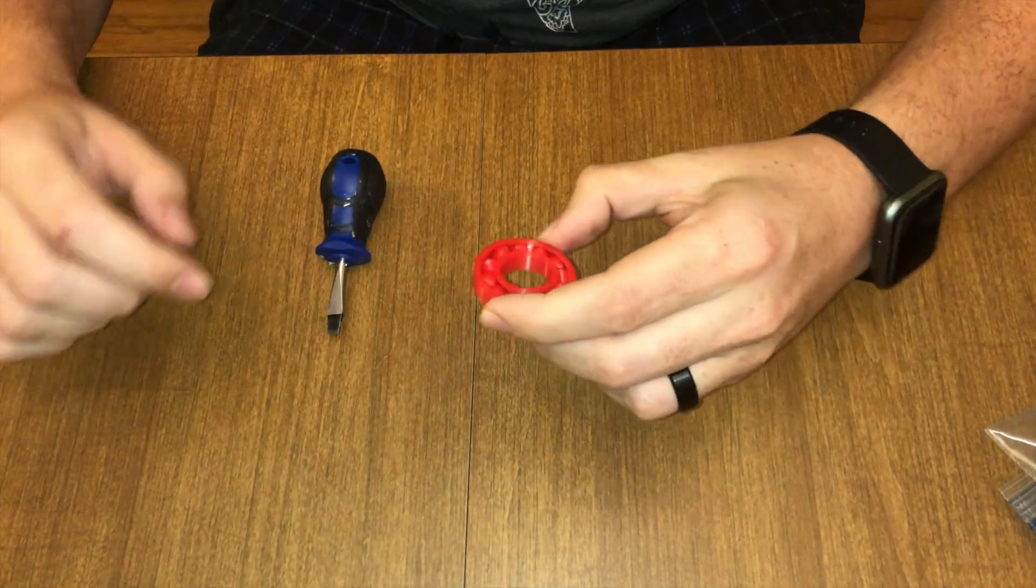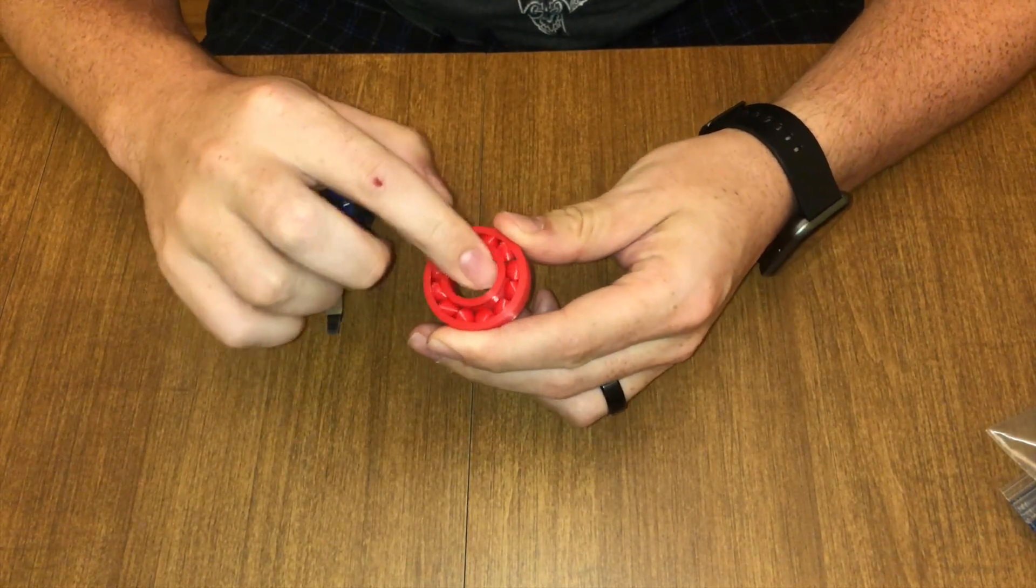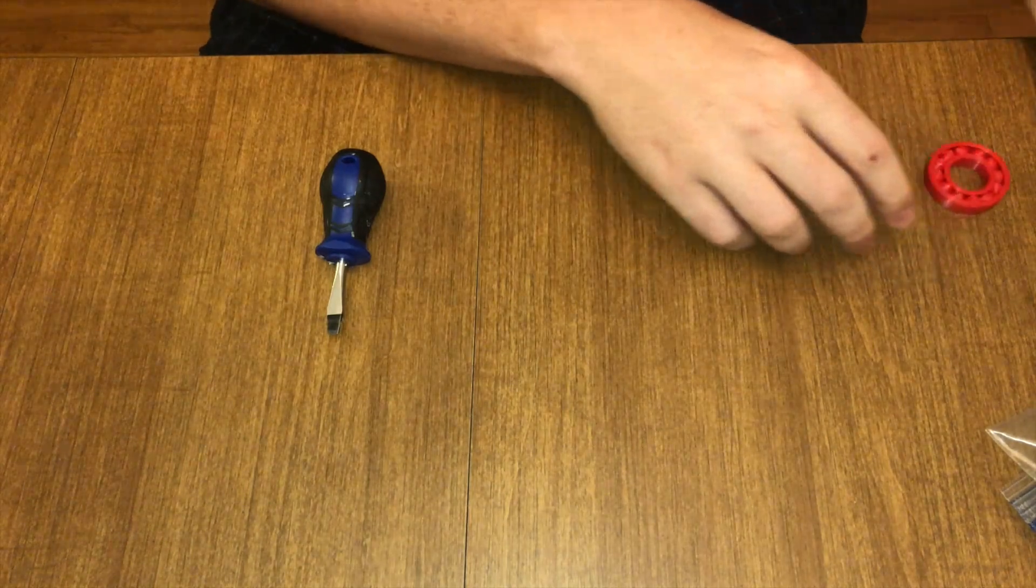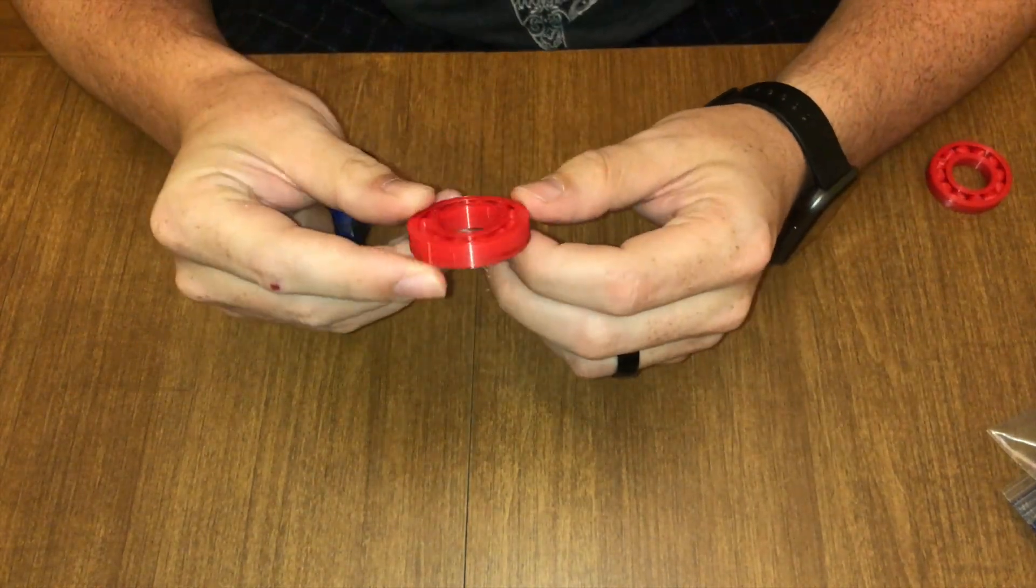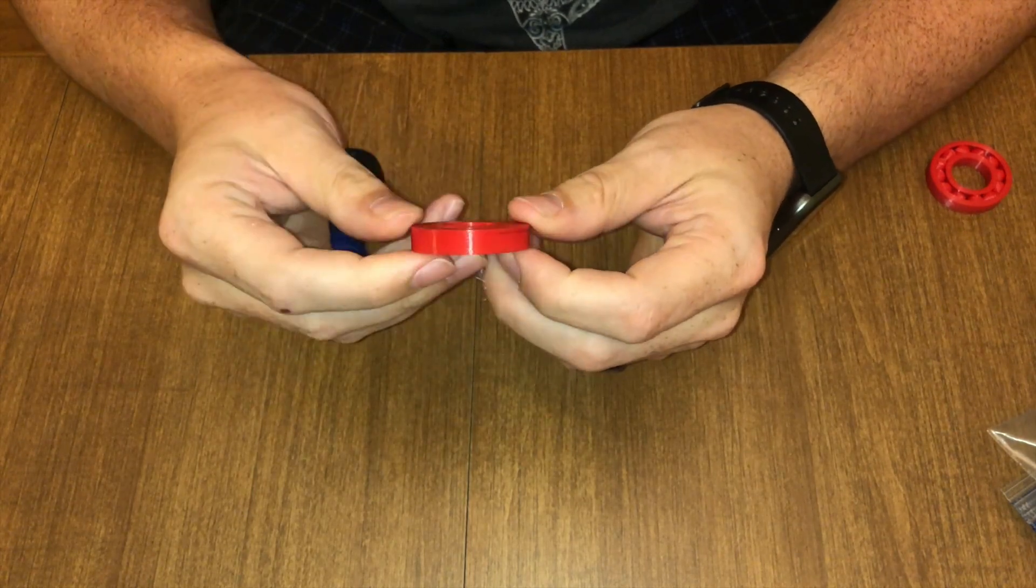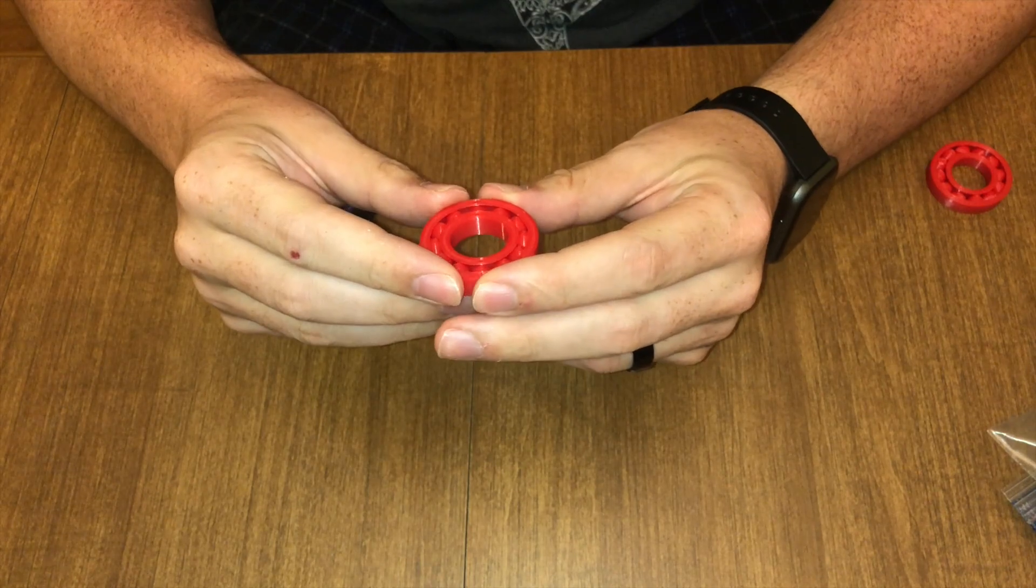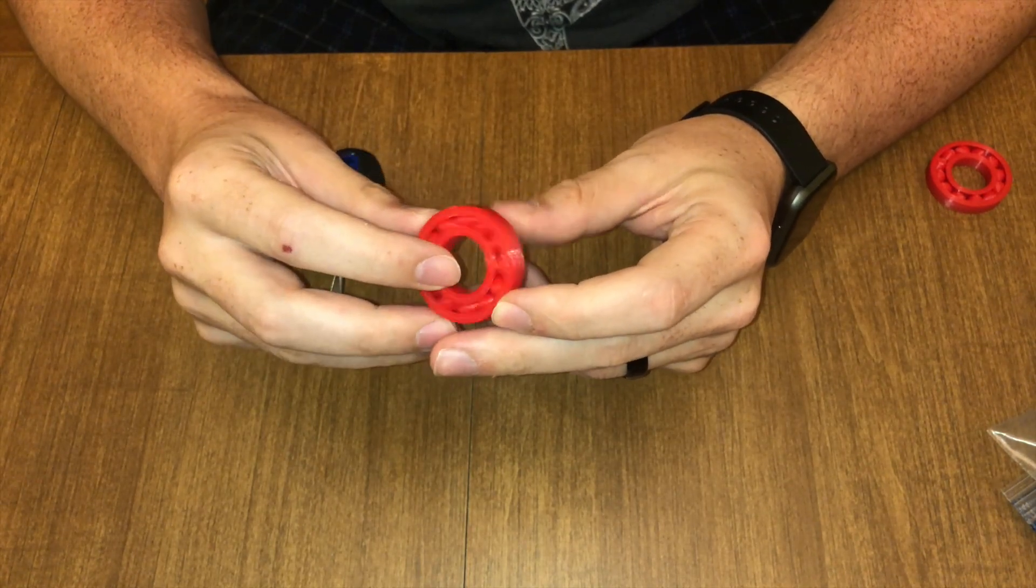Alright, we're back. Here's the old bearing, super loosey goosey. And here is the newly printed bearing. It's very tight. So I'm going to see if I can remove these supports and I'm going to work it in a little bit, see if we can make this spin like a normal bearing.